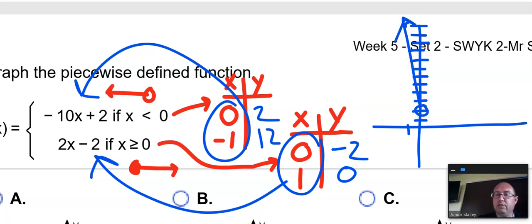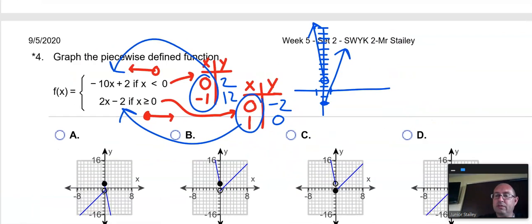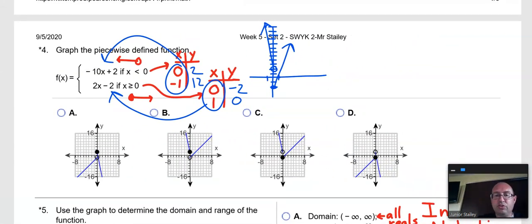That's pretty doggone steep to the left. Okay. And 0, negative 2 is going to be my closed circle. 0, going through the point, 1, 0, right there. So, which one of those is the correct picture?